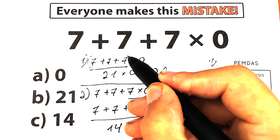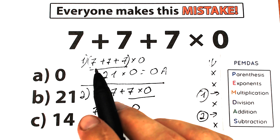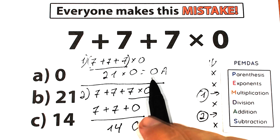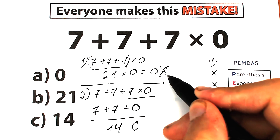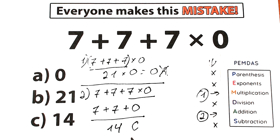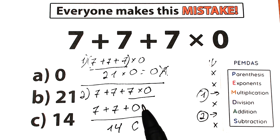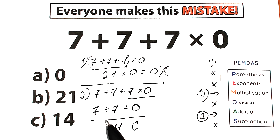If we had brackets, then option A would be correct, because first we evaluate the expression inside parentheses: 7 plus 7 plus 7 equals 21, then 21 times 0 equals 0. So with brackets that would be the correct answer. But in our case we don't have any brackets, so that is absolutely the wrong answer. Looking at our second interpretation, we solve according to PEMDAS — first multiply 7 times 0 which equals 0, then add 7 plus 7 plus 0 which equals 14. This is option C — the correct answer.